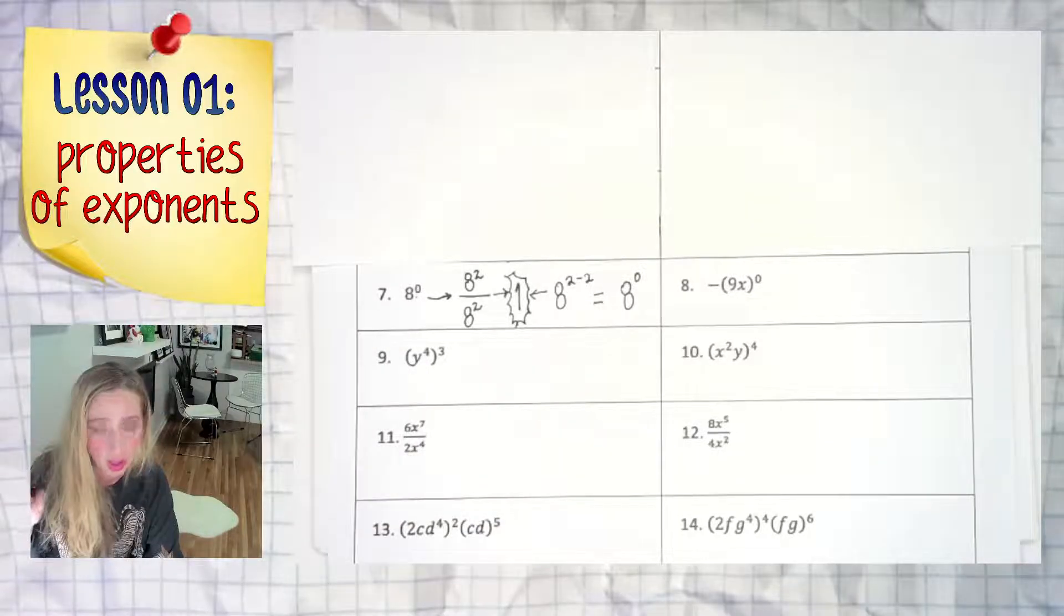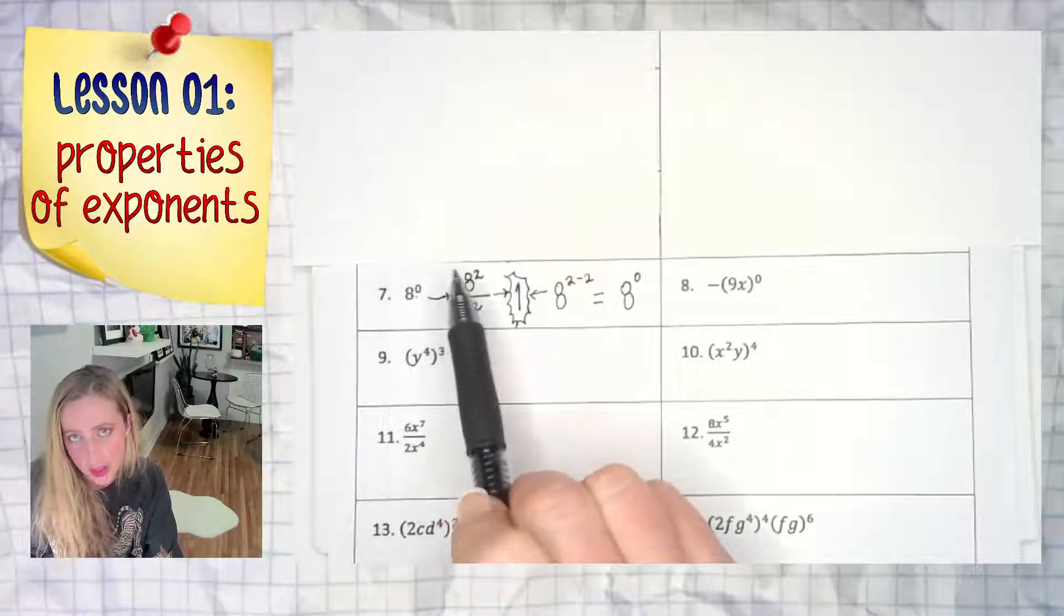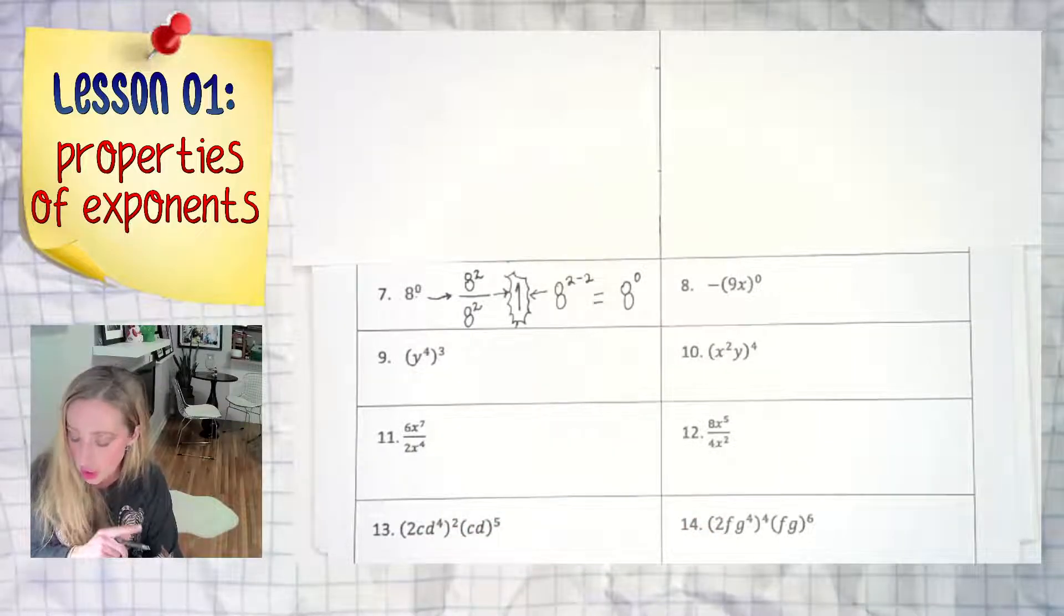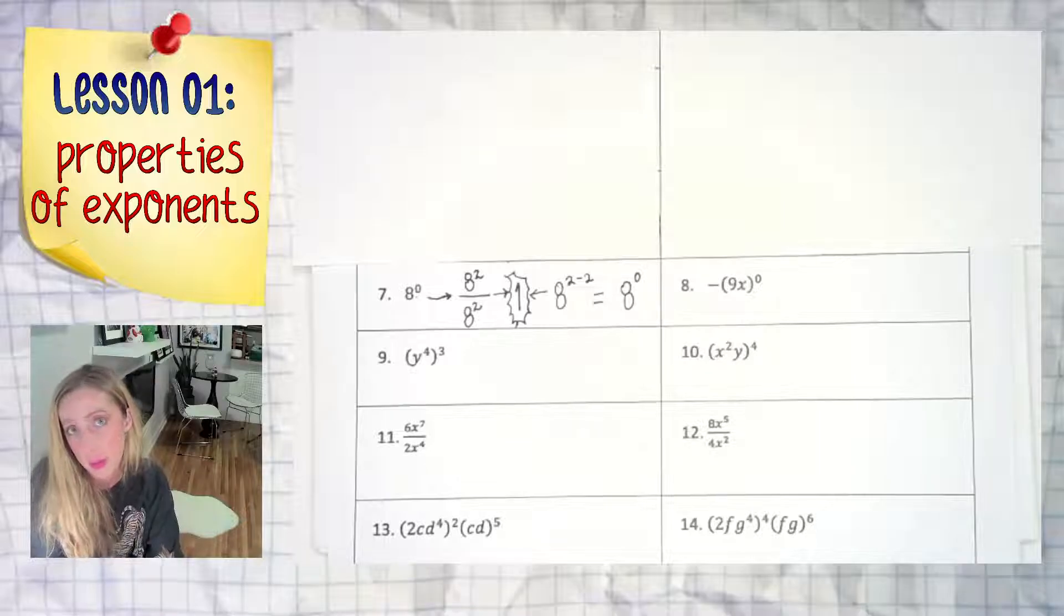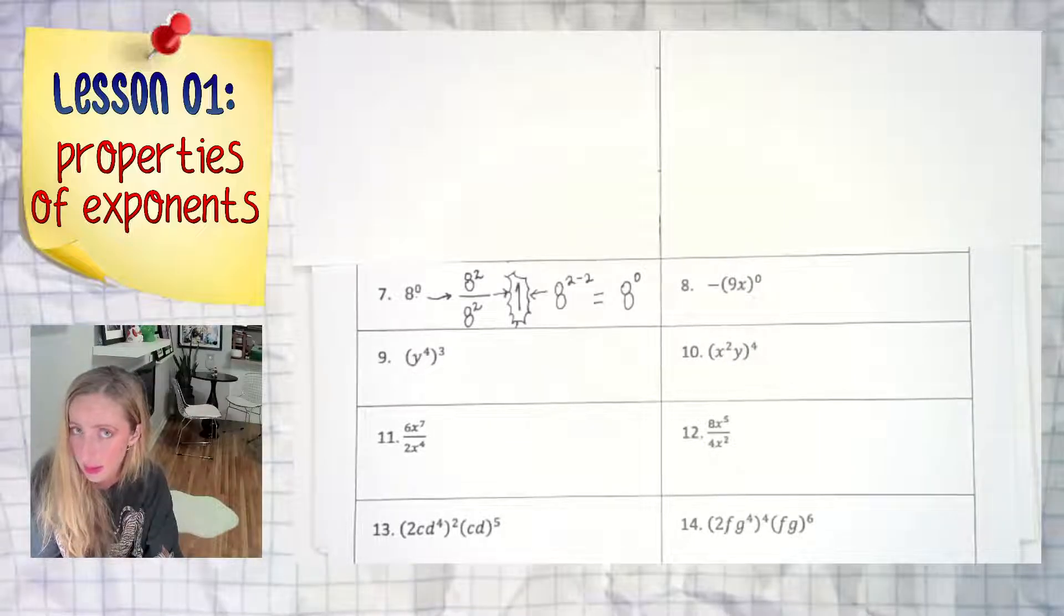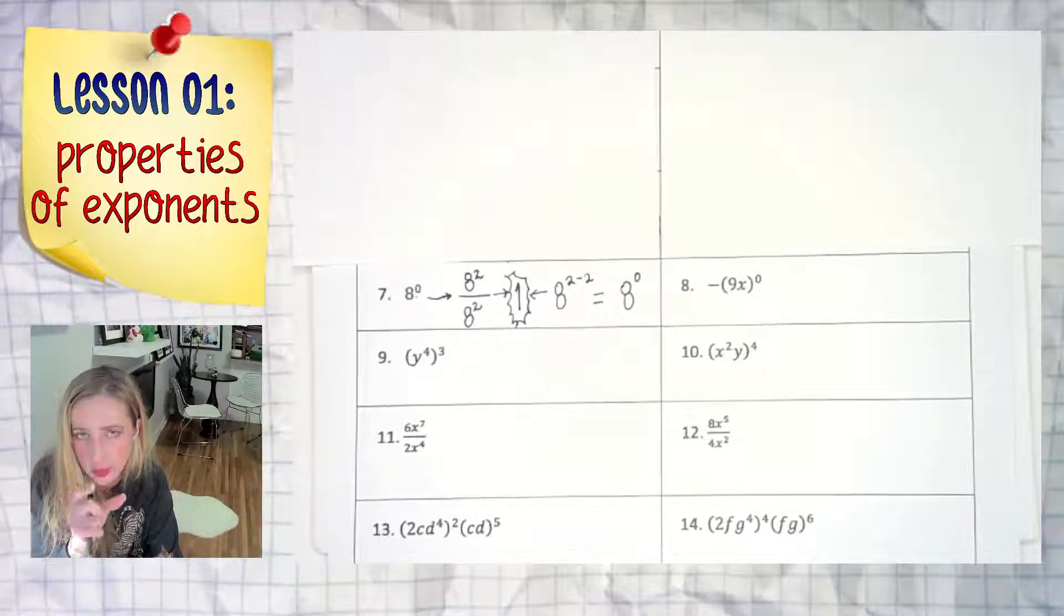PEMDAS: You would still do 8 to the zero, that's one, and that negative is multiplication after, so your final answer would be negative one. If the negative were in parentheses, negative eight raised to the zero, then that answer would be positive one.